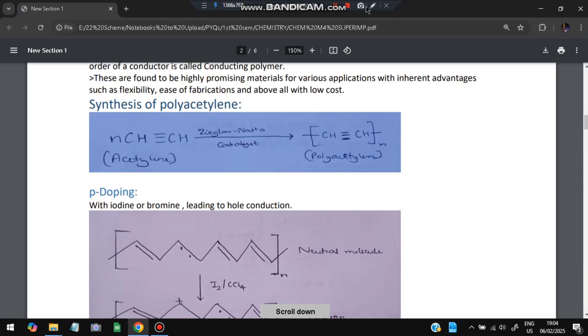The synthesis of polyacetylene is as follows: this is HC≡CH with a triple bond, this is acetylene. And with a catalyst it becomes polyacetylene.